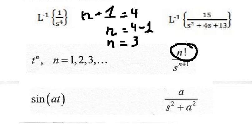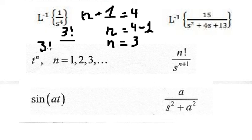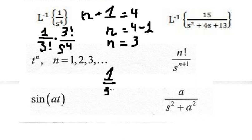But we don't have factorial in here, so before doing the inverse Laplace transformation we can put three factorial on both the numerator and denominator. This will invert to give us one over three factorial multiplied by t to the power of three. Three factorial equals six.